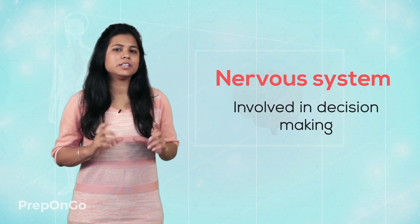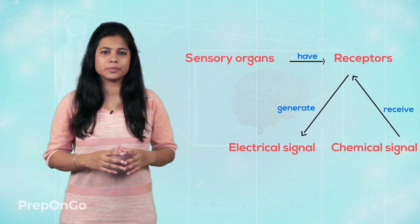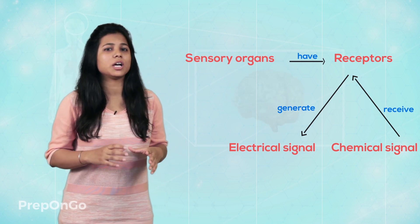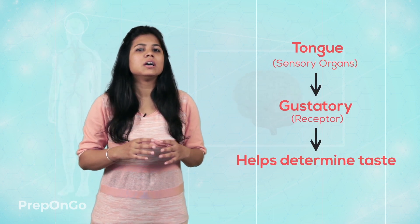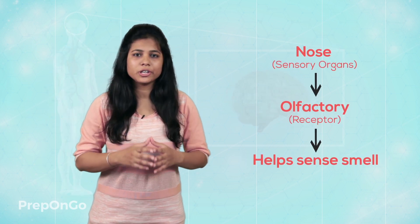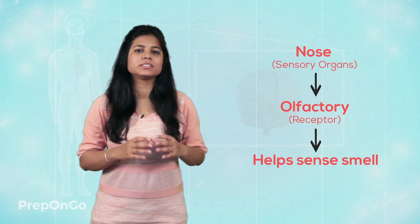We know that the nervous system is involved in the decision-making process. Carrying of information to the brain is the second step. First, to carry the information, the signal has to be generated. Here is the point where the receptors come to the forefront. The receptors are present in the sensory organs which help us to generate the signals. Like, the gustatory receptor present in the tongue helps in detection of taste, while the olfactory lobes are present in the nose which detects the smell.